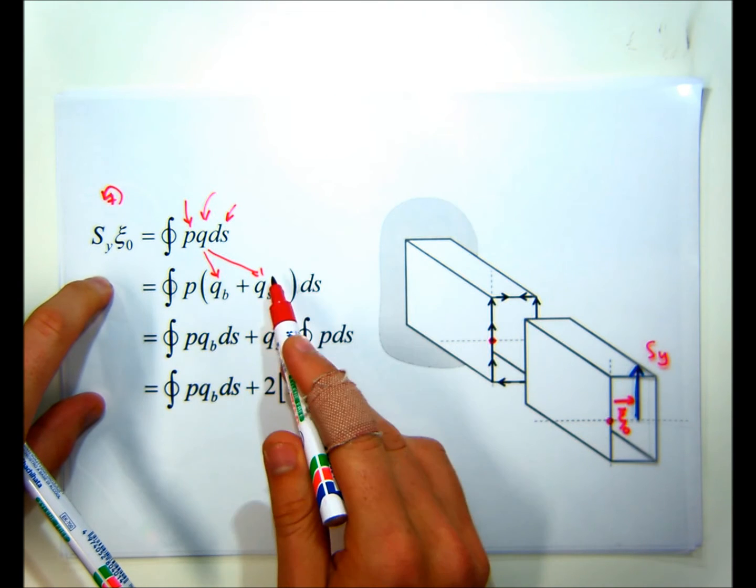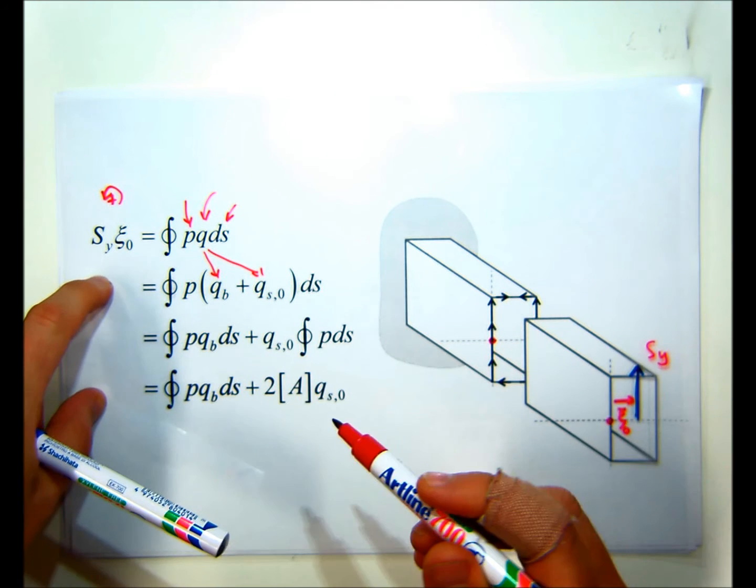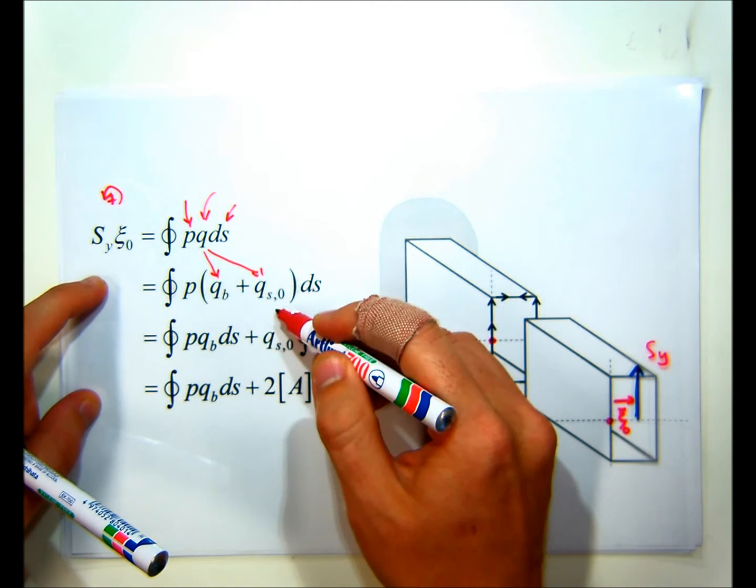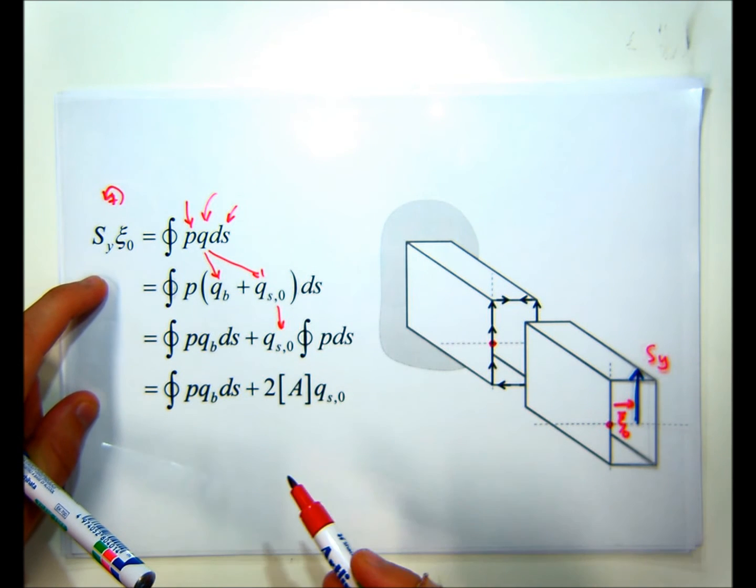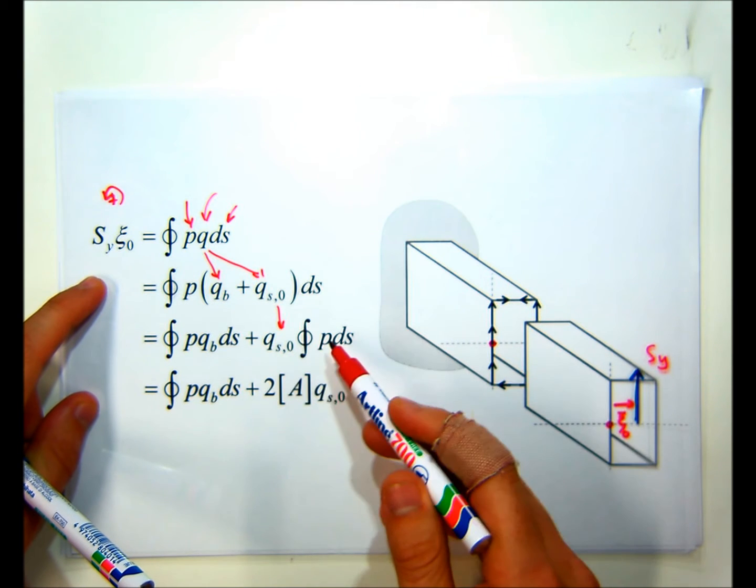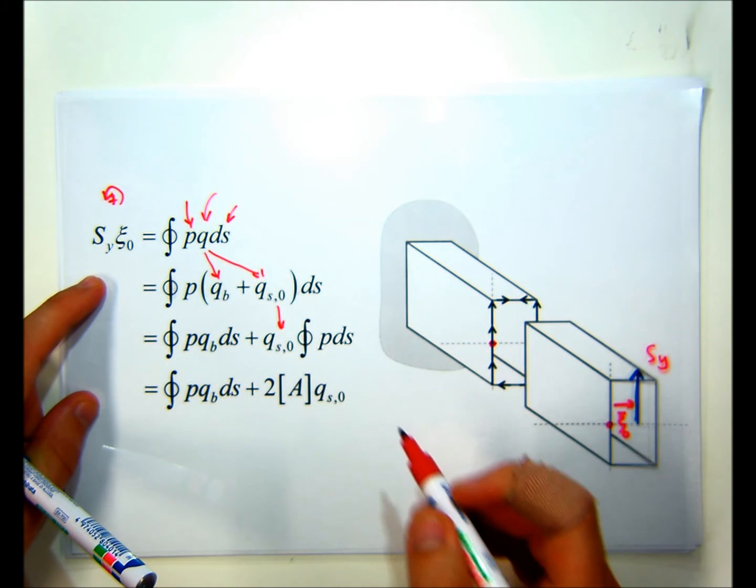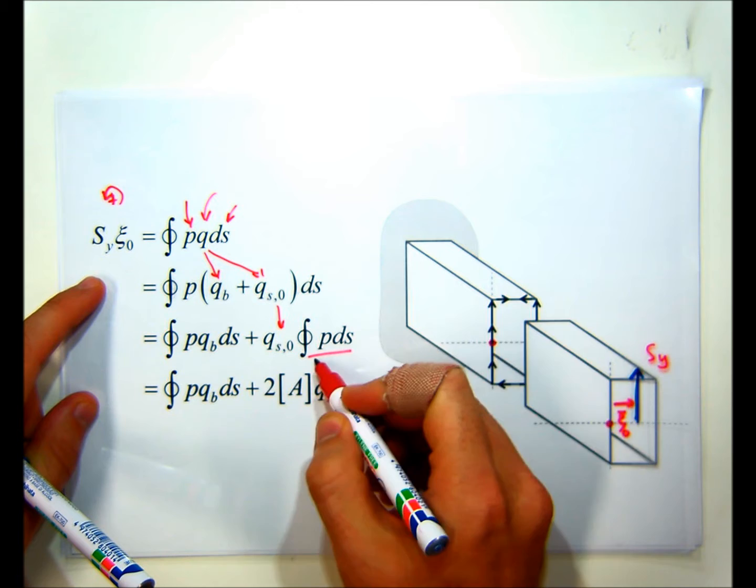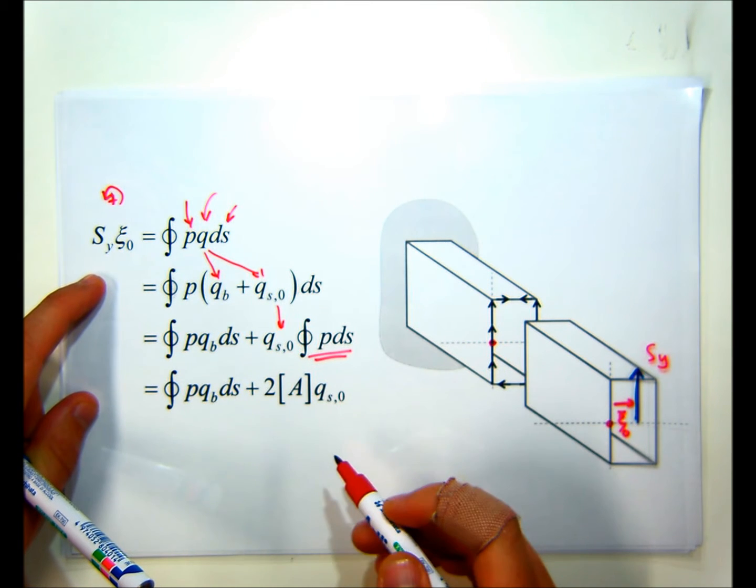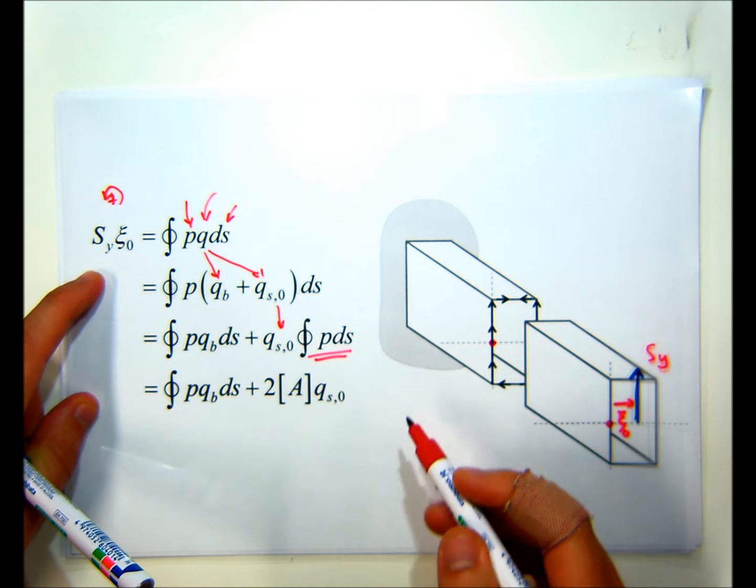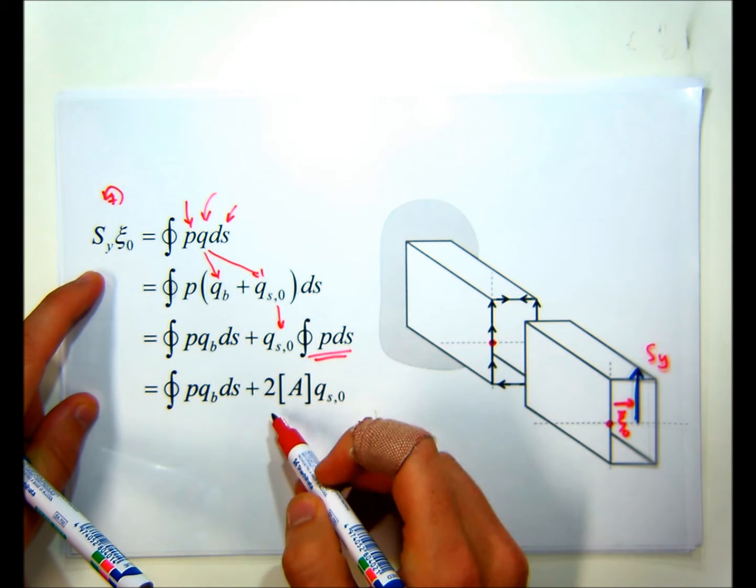And we know that this QS0 is constant around the entire section, so we can take that outside the integral, whereas QB is not constant. We need to keep that inside. So we also know from geometry in class that this integral here, PQDS, is also related to the cross-sectional area of the section, or the total enclosed area in the section. And that is given here.